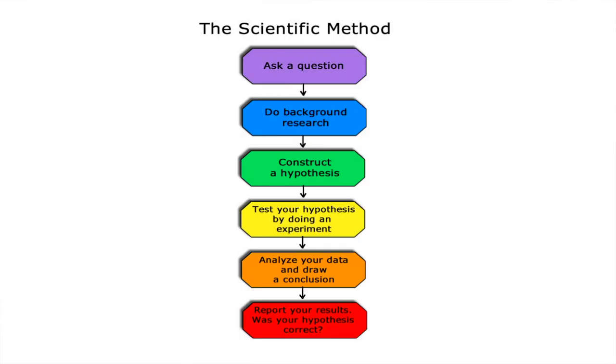Now that we understand the general purpose of doing our research, it's important to consider the different aspects of a research design, which goes back to our understanding of the scientific method. The six components include: asking a research question, doing background research, constructing a hypothesis, testing your hypothesis by doing an experiment, analyzing your data and drawing a conclusion, and reporting your results.